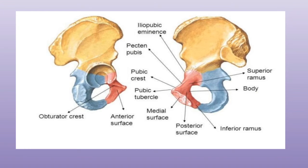At the ischial spine, the sacrospinous ligament attaches along its margin, and the posterior fibers of the levator ani originate from its pelvic surface. The dorsal surface of the ischial spine is crossed by the pudendal nerve, the internal pudendal vessels, and the nerve to the obturator internus.